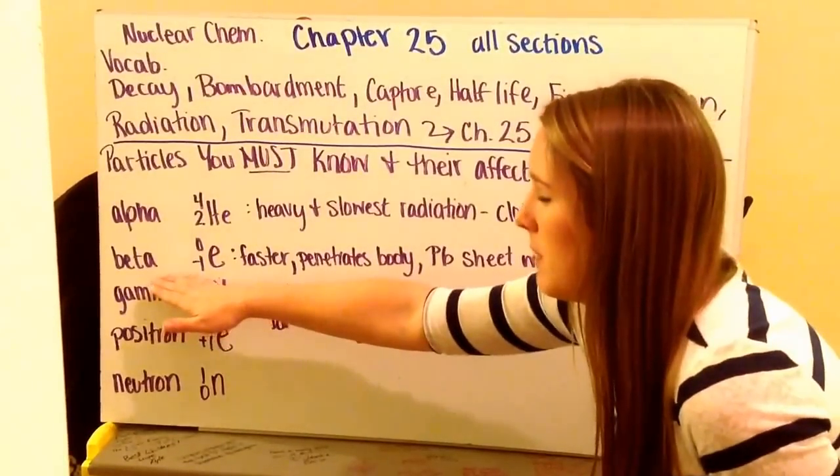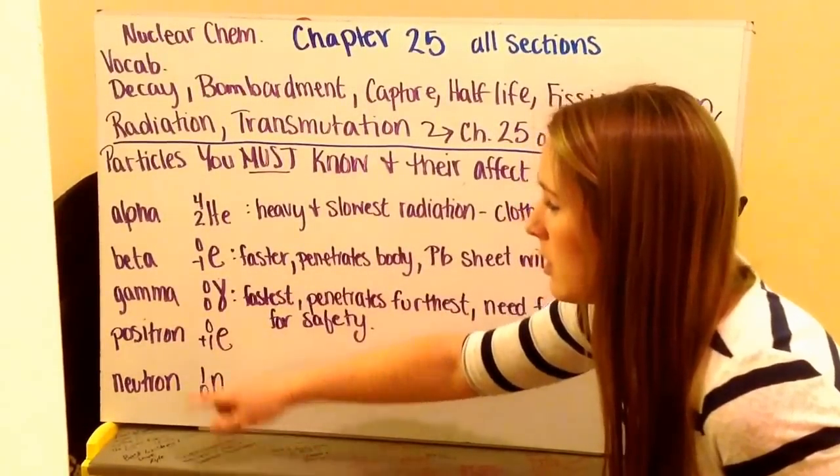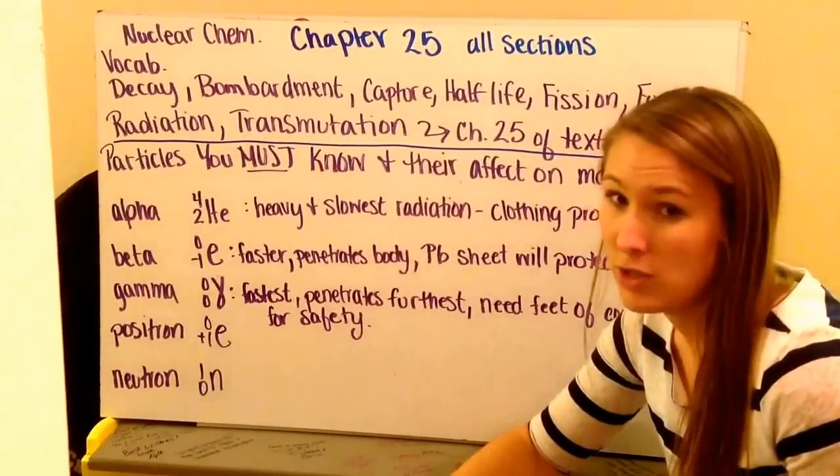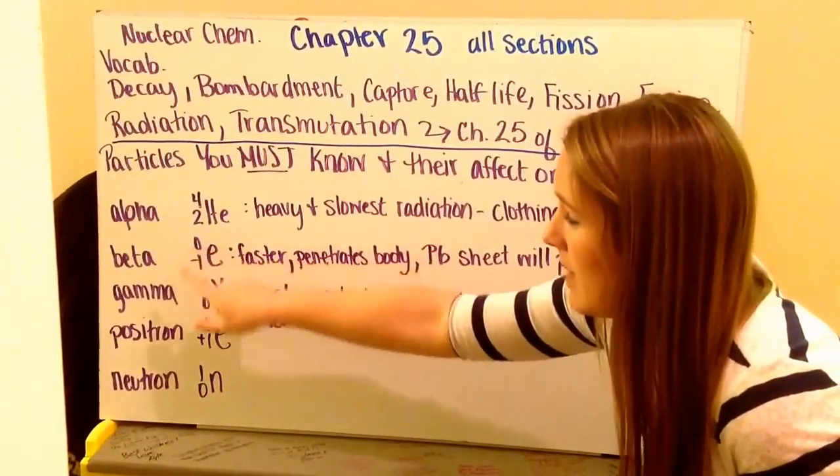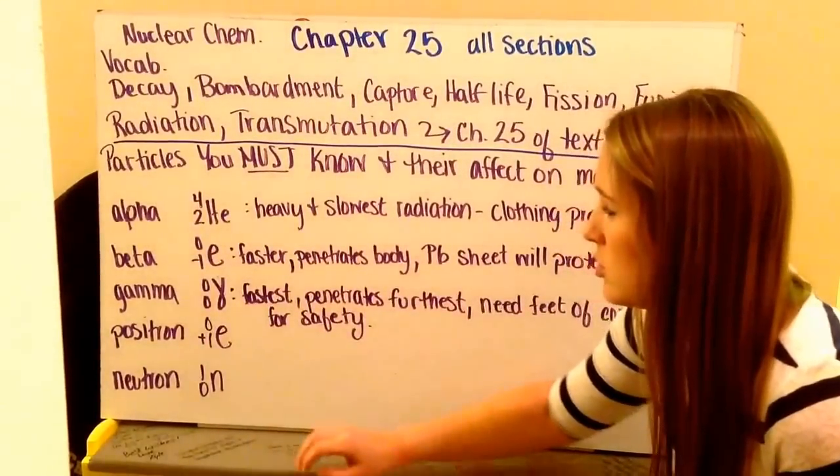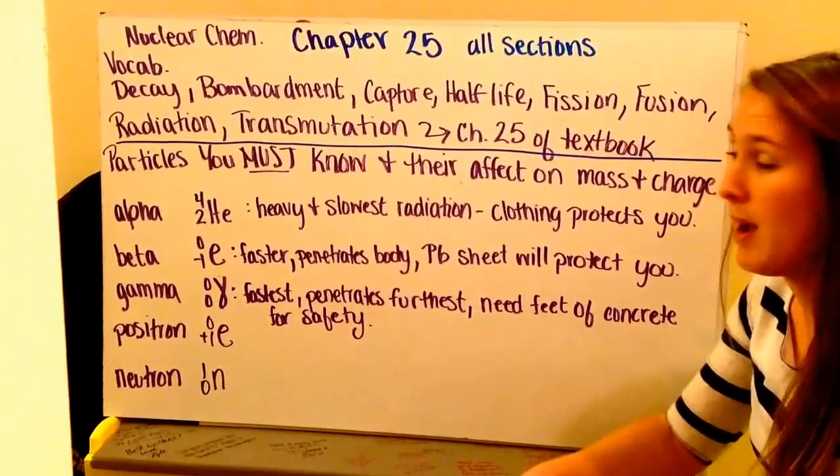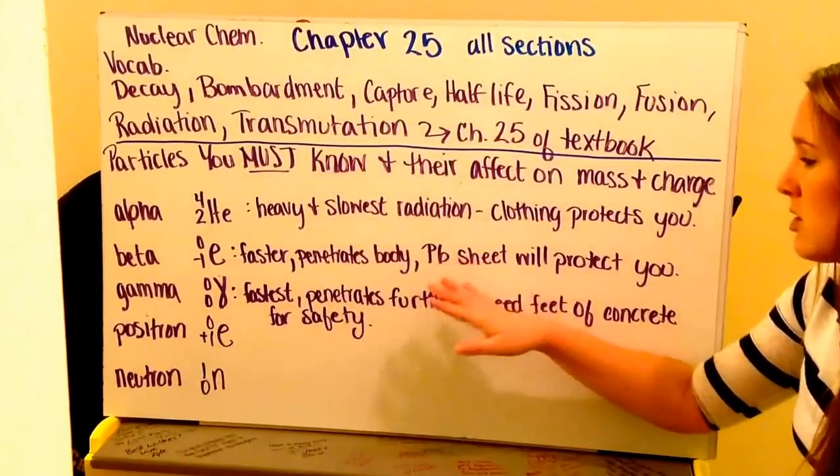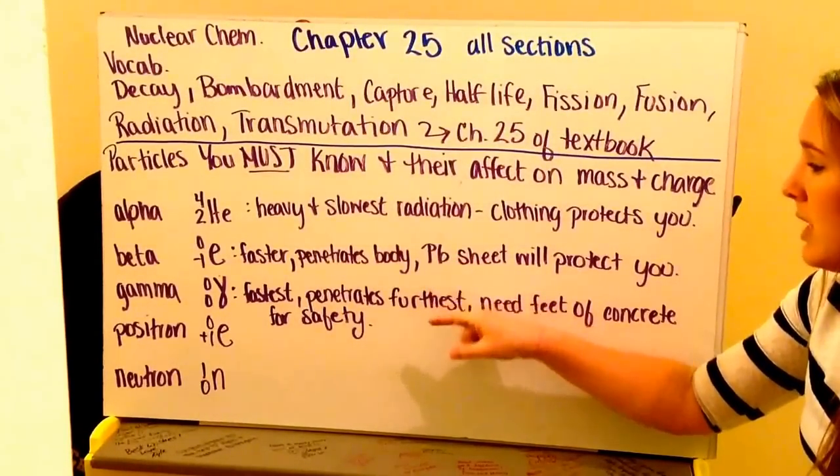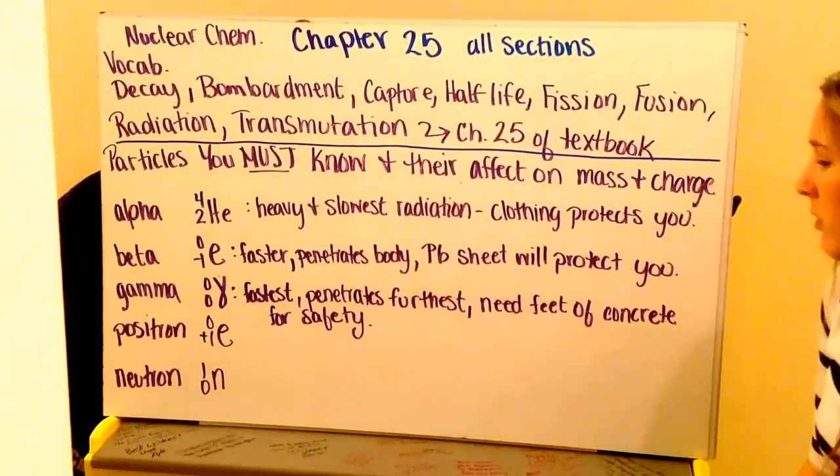Next we have beta radiation or a beta particle. This looks like and is shown as an electron. Electrons do not have any mass. They have a negative one charge to them. These are going to be faster than alpha particles. They're going to penetrate the body. And in order to protect yourself from a beta particle radiation, you need a thin sheet of lead to protect you.